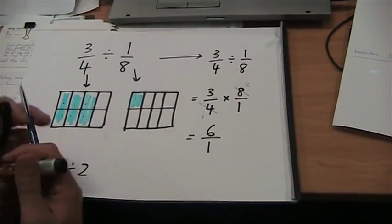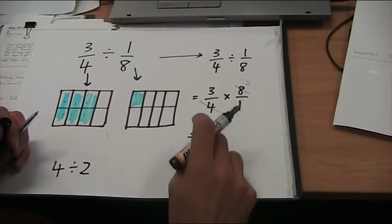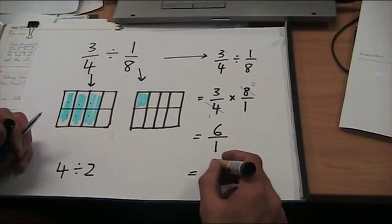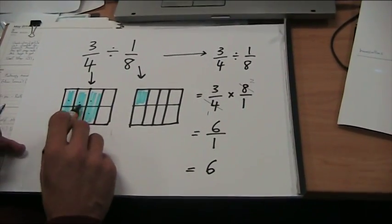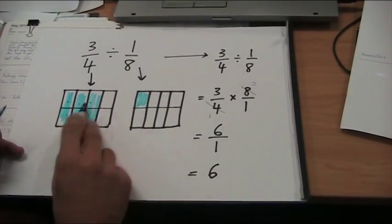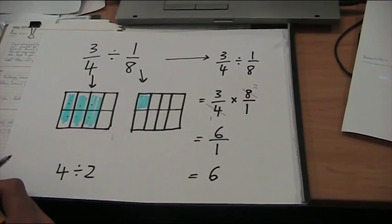That is 6 over 1, which means there's one piece in the whole, and there's 6 of them there, which is just the same as 6 wholes. And that's what we thought before. That will fit in 6 times. And you're done.